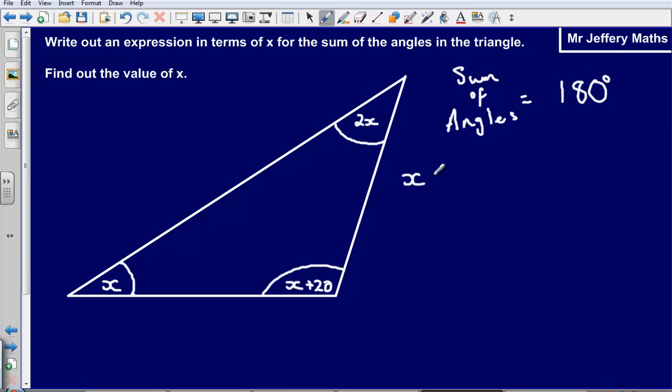So x plus 2x plus x plus 20. Well, adding all of those together gives me 180 degrees.